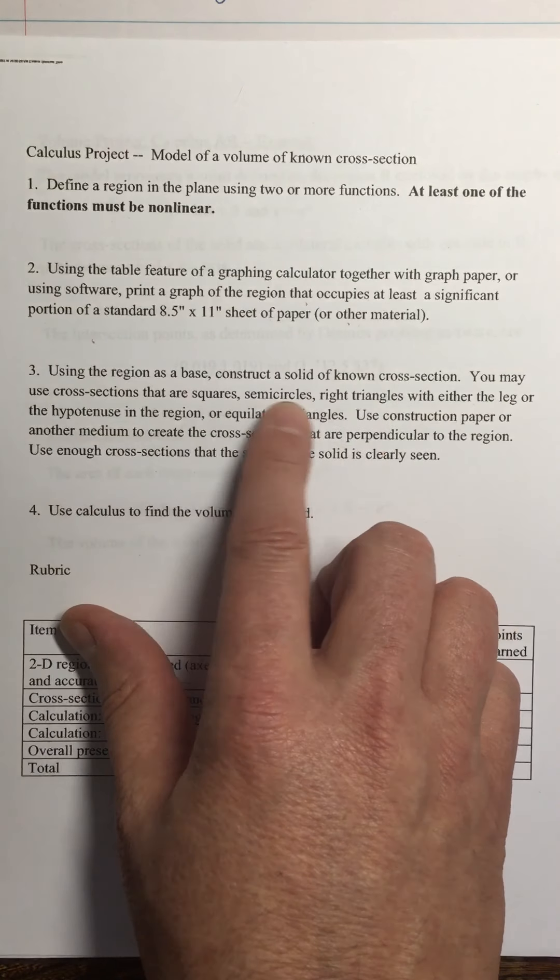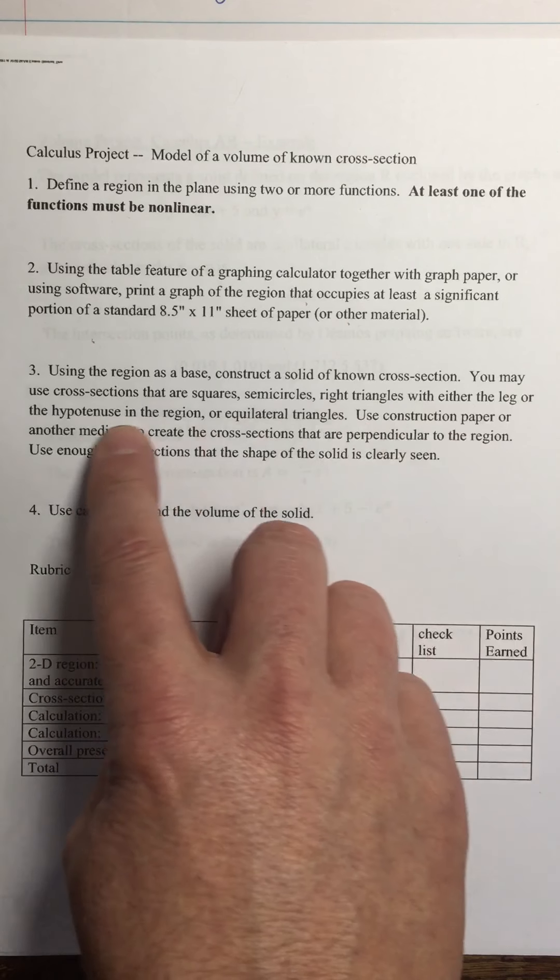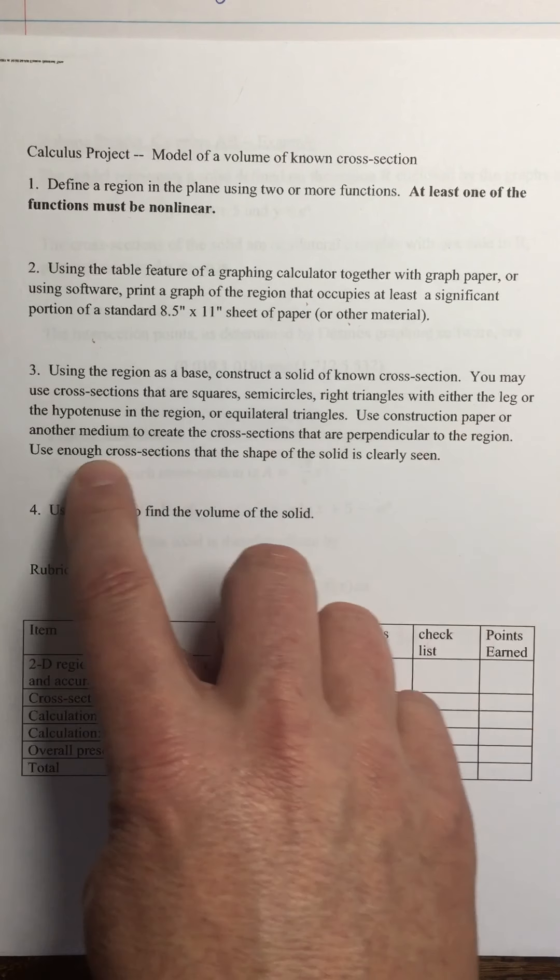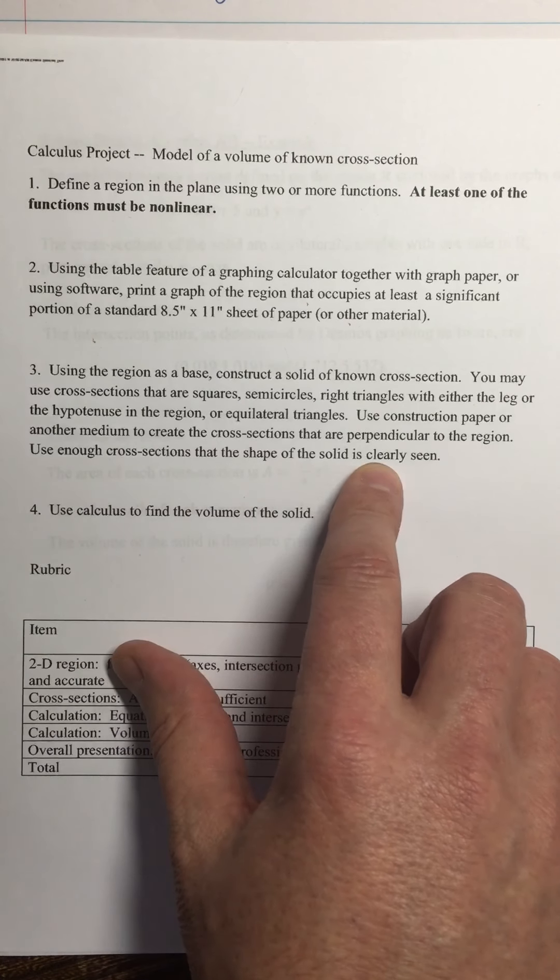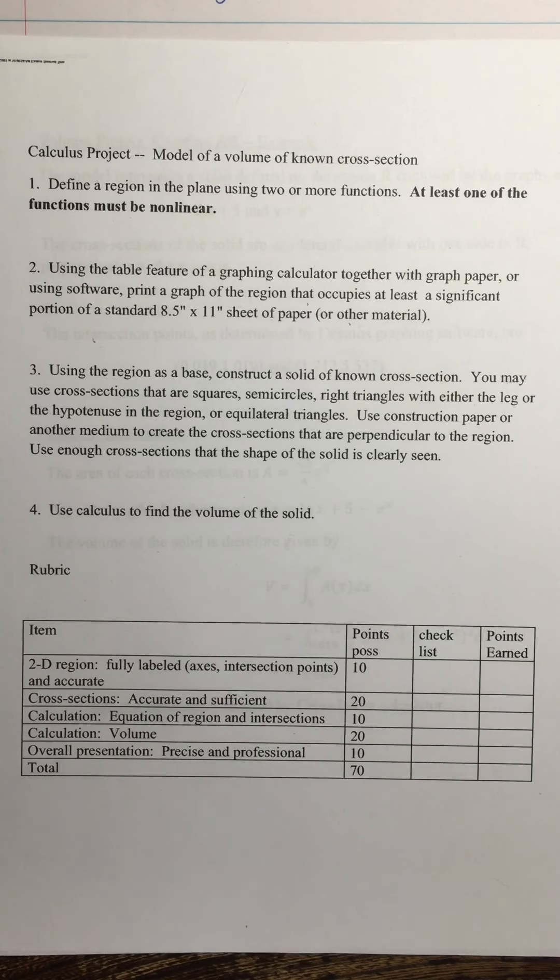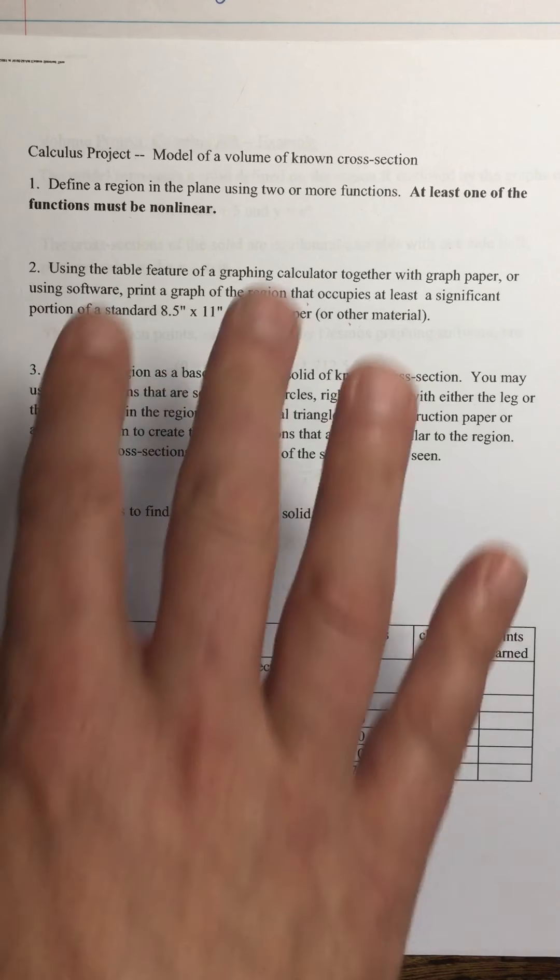We're going to create cross-sections perpendicular to the region using enough cross-sections that the shape of the solid can be clearly seen. We're going to use calculus to find the volume of the solid. And that's it.